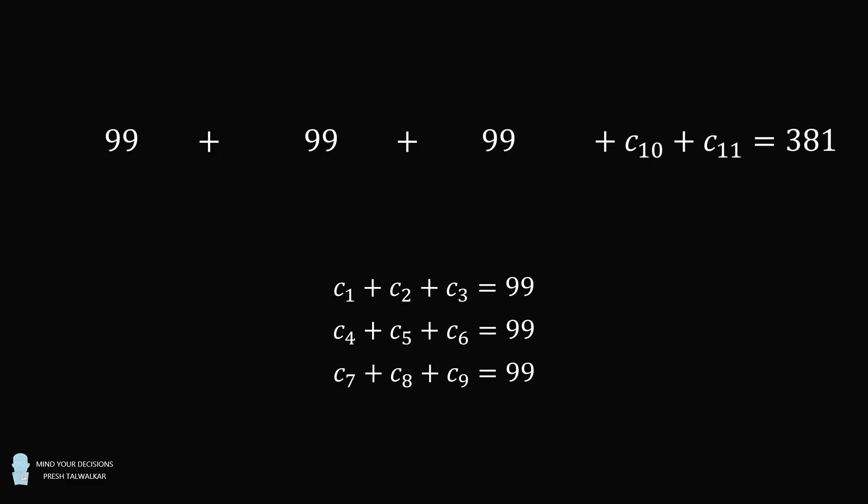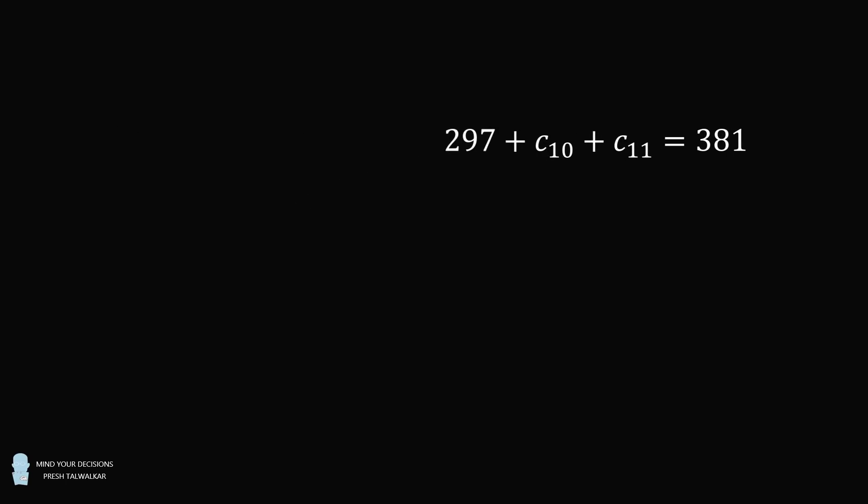The sum of 99, 99, and 99 is equal to 297. The equation then becomes 297 + C10 + C11 = 381.